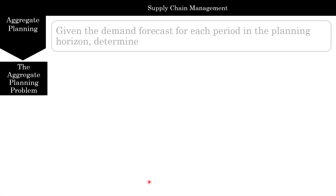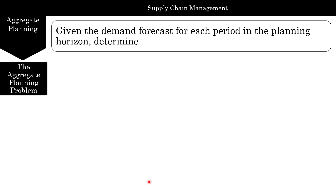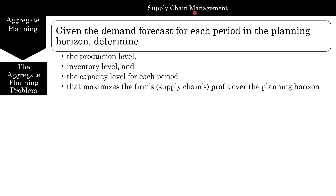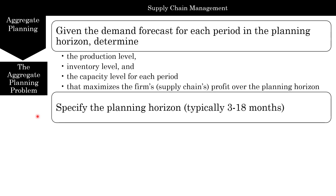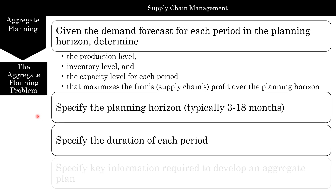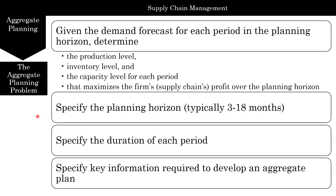Before you start an aggregate plan, you need to know the demand forecast for that planning period. Once you have that, you can figure out the production level, the inventory level, the capacity level, and the total profit. We're trying to maximize the firm's and supply chain's profit over that horizon. We also need to figure out the planning horizon, the duration of each period, and specify key information required to develop an aggregate plan.